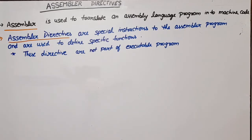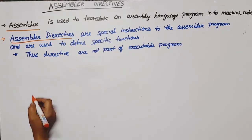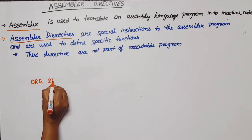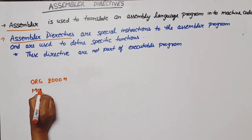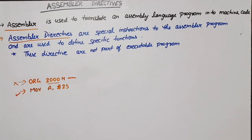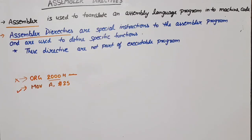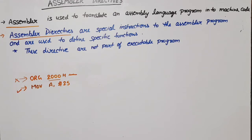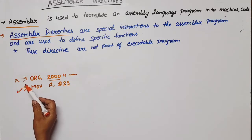Hello everyone. In this video lecture of microprocessor and microcontroller, I am going to discuss assembler directives for 8051. First of all, let's discuss what is the assembler. Assembler is used to translate assembly language program into machine code. Assembler directives are special instructions to the assembler program and are used to define specific functions. For example, ORG defines the starting location of a program, and these directives are not executable. This is the difference between an instruction and an assembler directive.